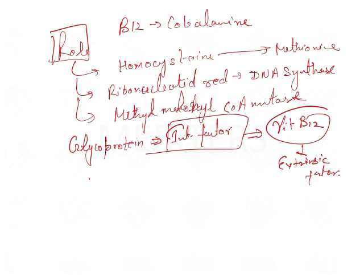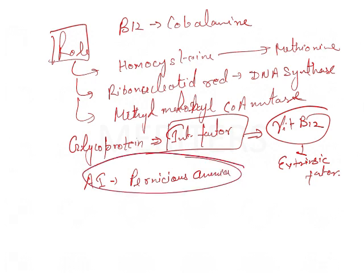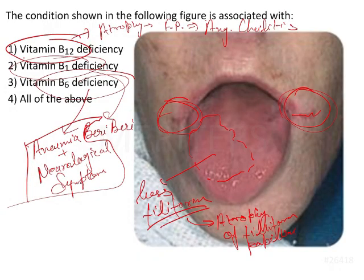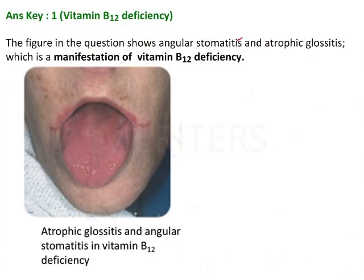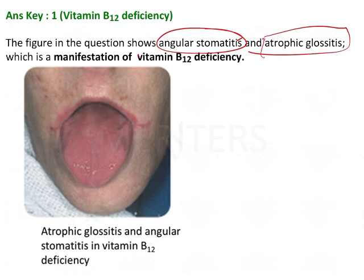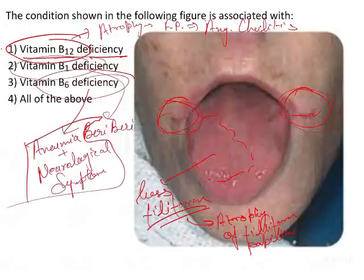There is an autoimmune disease known as pernicious anemia, in which this particular vitamin is not able to be absorbed by the cells because the Castle's intrinsic factor is not produced from the parietal cells. That's why the patient gets pernicious anemia. So going back to the question, the figure shows angular cheilitis or angular stomatitis along with atrophic glossitis — that is the manifestation of Vitamin B12 deficiency, hence the answer is option one.